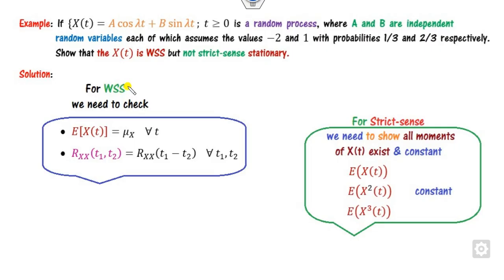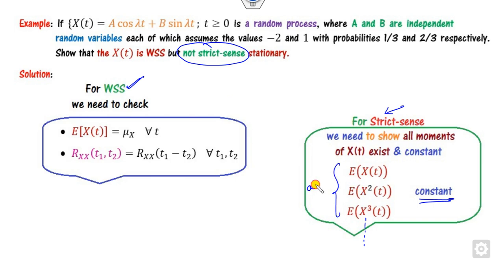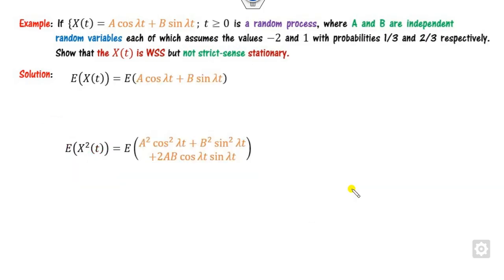In order to prove it is weak sense, you have to prove the two conditions — constant mean and autocorrelation depending only on time difference. To prove it is not strict sense, you need to show that at least one of E[x], E[x²], E[x³], ... is not constant. Let us compute E[a], E[b], E[a²], and so on.